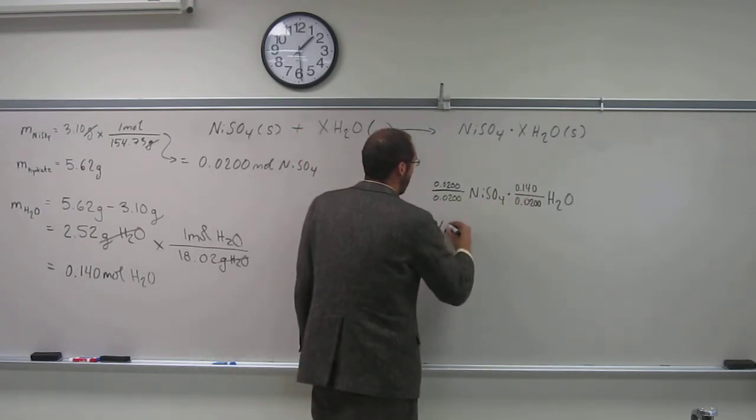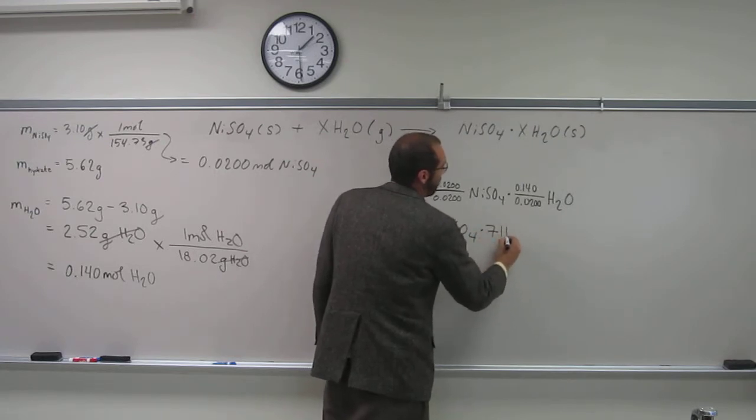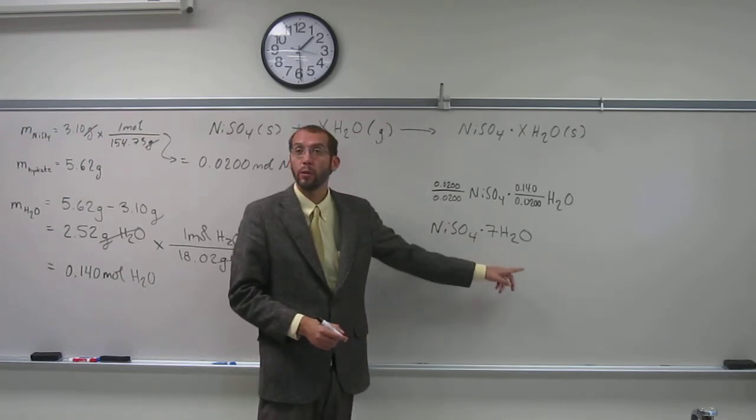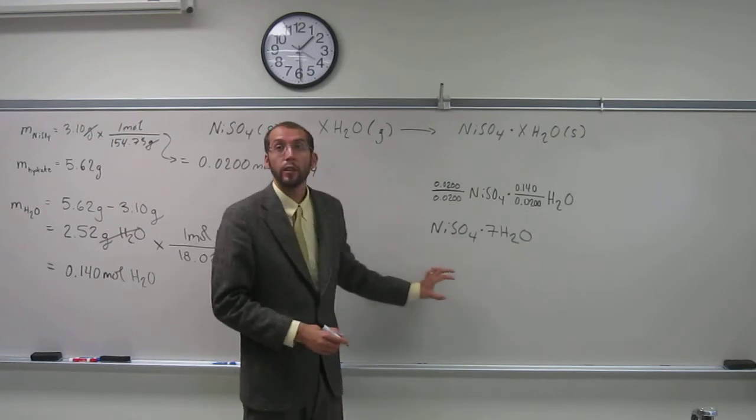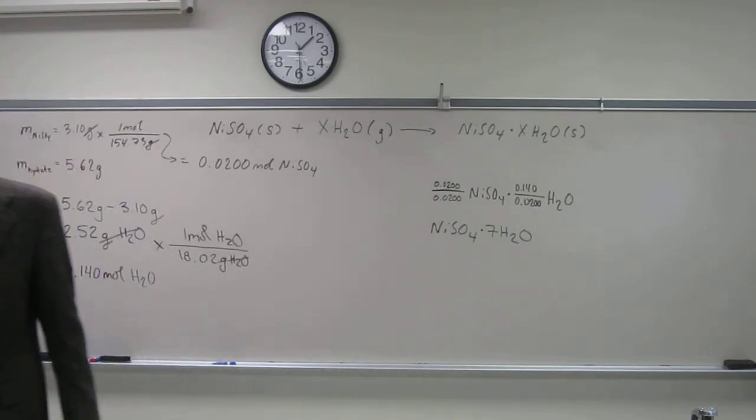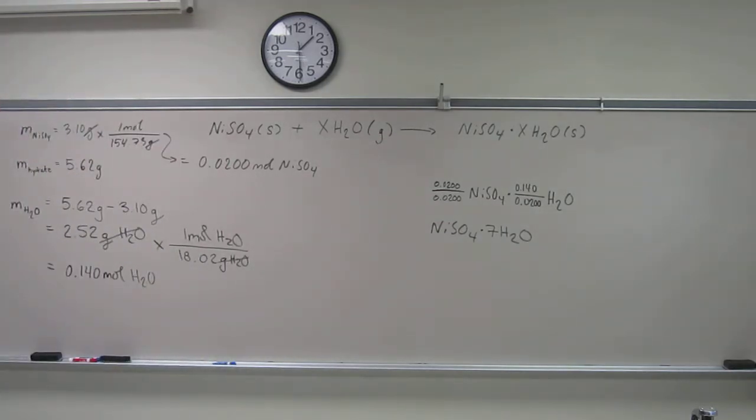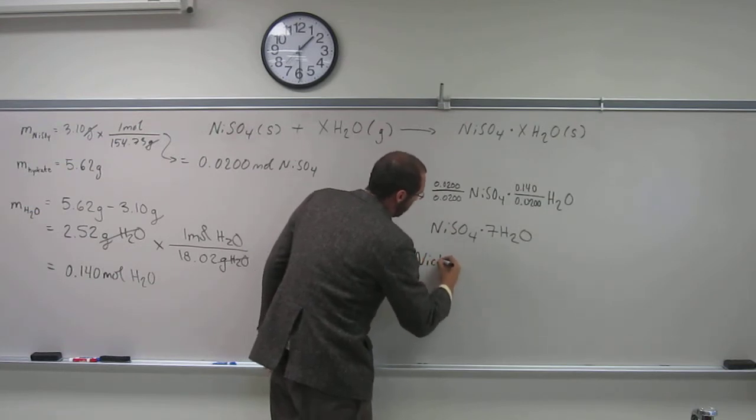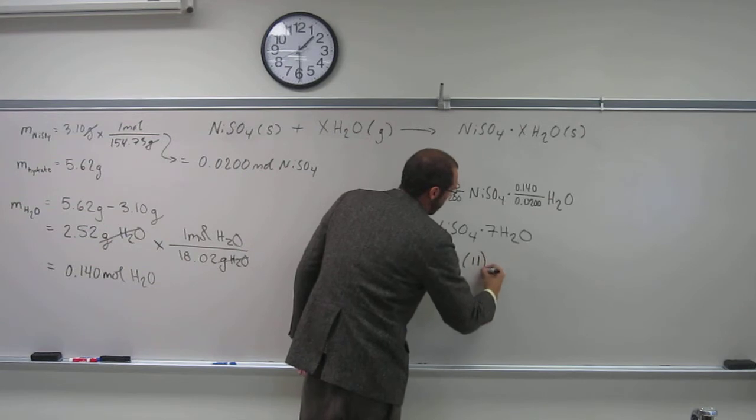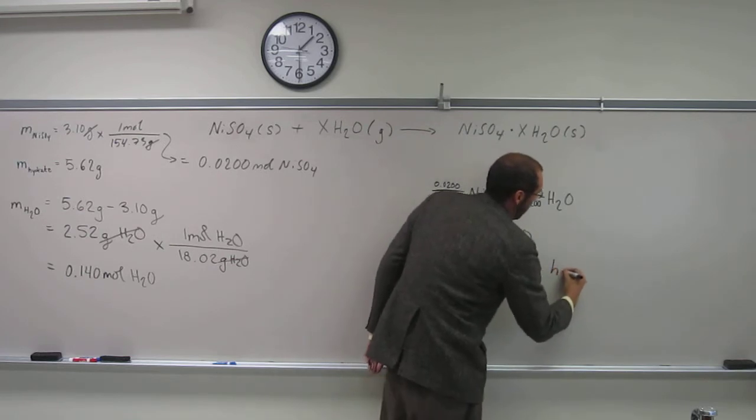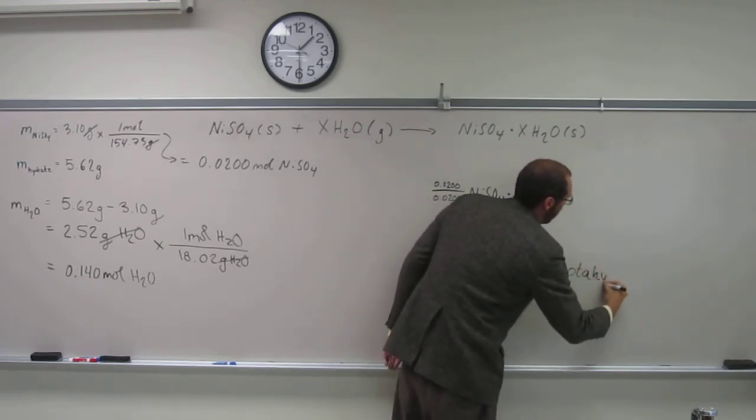What would our formula be? Nickel(II) sulfate heptahydrate. Or NiSO4·7H2O. And if we wanted to name it, it would be nickel(II) sulfate heptahydrate. Why do I keep saying nickel(II)? Because nickel is a transition metal, so we have to say nickel(II). Let's just write out the name of this: nickel(II) sulfate heptahydrate. The 2 is because nickel's a transition metal. Hepta means 7, hydrate means water.